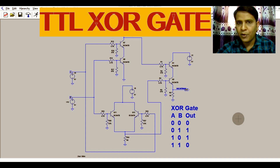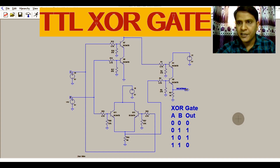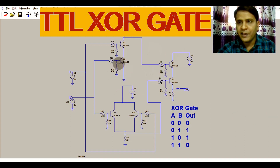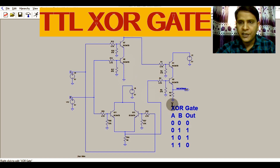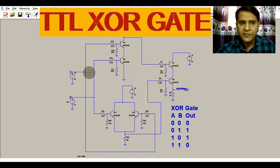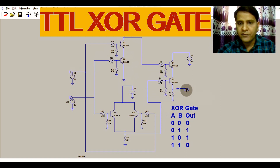In this video, we are going to learn about the operation of XOR gate by using transistor in LTSPICE. Here you can see a very complex circuit to demonstrate the operation of XOR gate. We have two inputs, A and B, and one output which is called out.